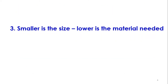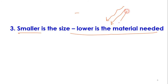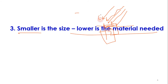The third property is: the smaller the size, the lower the material needed. For example, in a solar cell, we need a material to absorb sunlight. If we use a bulk material, only the top surface is exposed to sunlight and the rest is wasted. With nanomaterial, the smaller size means more surface is exposed relative to volume, so it efficiently absorbs light and generates electrons.